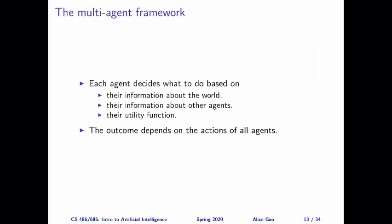Let's now make our multi-agent framework or environment more specific. In this multi-agent framework, there are multiple agents and each agent is trying to decide on what strategies they should use to play this game. Their decision will be based on the information they have about the environment — the passive things that don't change — as well as information about other agents, those intelligent agents that will make their own decisions and choose their own strategies. And finally, the agents will have their utility functions. So their decisions are going to be based on all of this information.